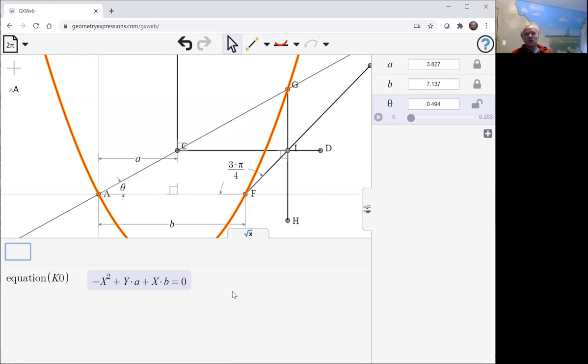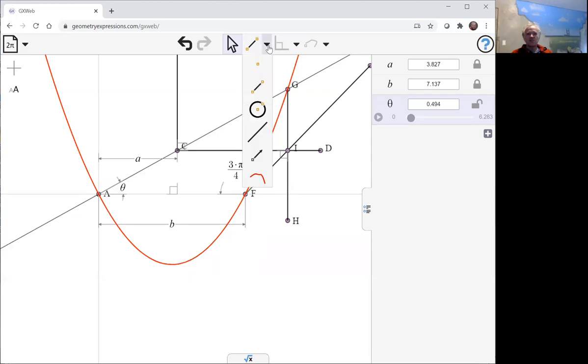The challenge for the viewer: work out from that equation where does the axis point lie in terms of a and b. Once you've discovered that, or once you've determined it, you could put the point in and specify its coordinates.